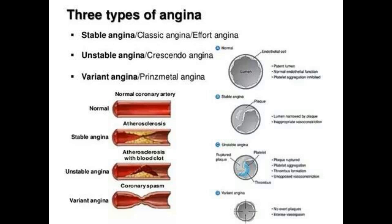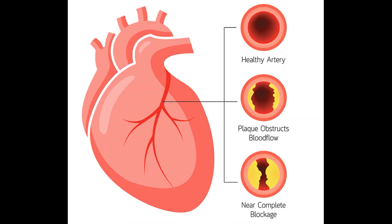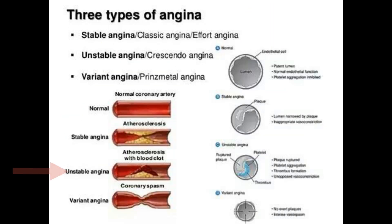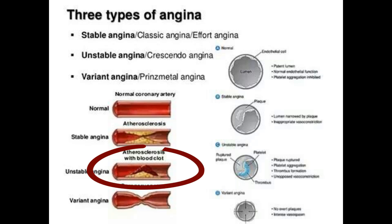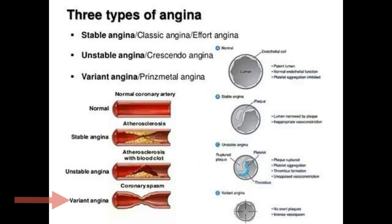Stable angina is stimulated by exertion and relieved by rest; it is caused by fixed stenosis in coronary arteries by fat. Unstable angina is precipitated by less effort or even at rest; blood flow is obstructed by both fat and blood clot deposition. Variant angina occurs due to vasospasm at rest.